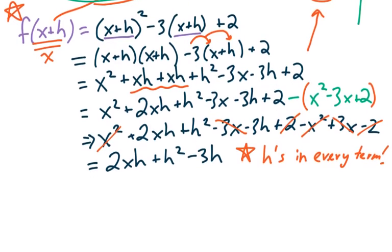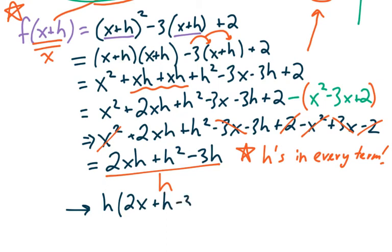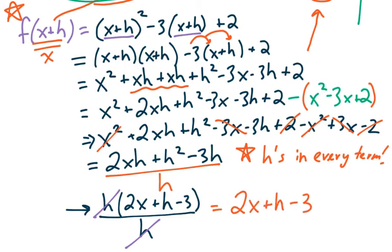The last step is to divide by h. Factor an h out of every term in the numerator: h times (2x plus h minus 3). Then cancel the h on top with the h on the bottom. The final answer — the difference quotient for f of x equals x squared minus 3x plus 2 — is 2x plus h minus 3. We'll definitely do a lot of practice of this in class, but you can see it takes a lot of algebra, which is why solid algebra skills are so important for this class. That ends section 1.1. Congratulations, you're all done!